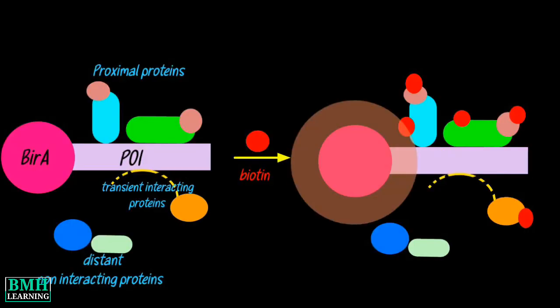Proximity labeling relies on the labeling of neighboring proteins within a cell with biotin. Biotin is a natural coenzyme that strongly binds the glycoprotein avidin, or a similar protein streptavidin. This strong interaction allows scientists to easily purify and identify any proteins that are tagged with biotin using avidin-coated purification techniques.